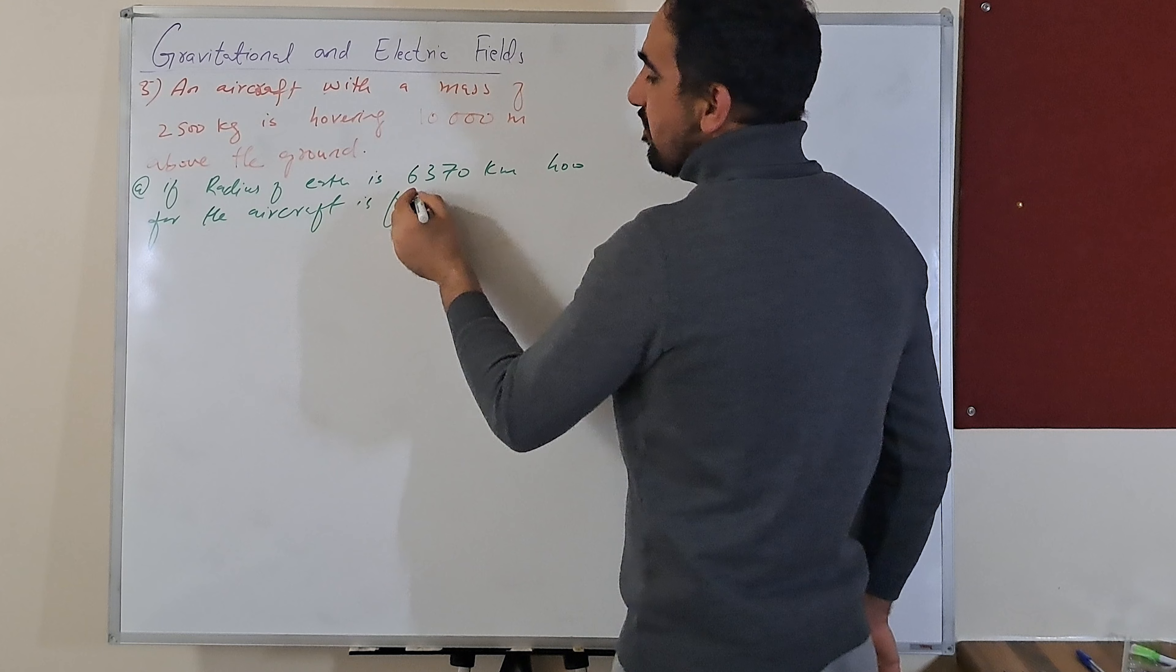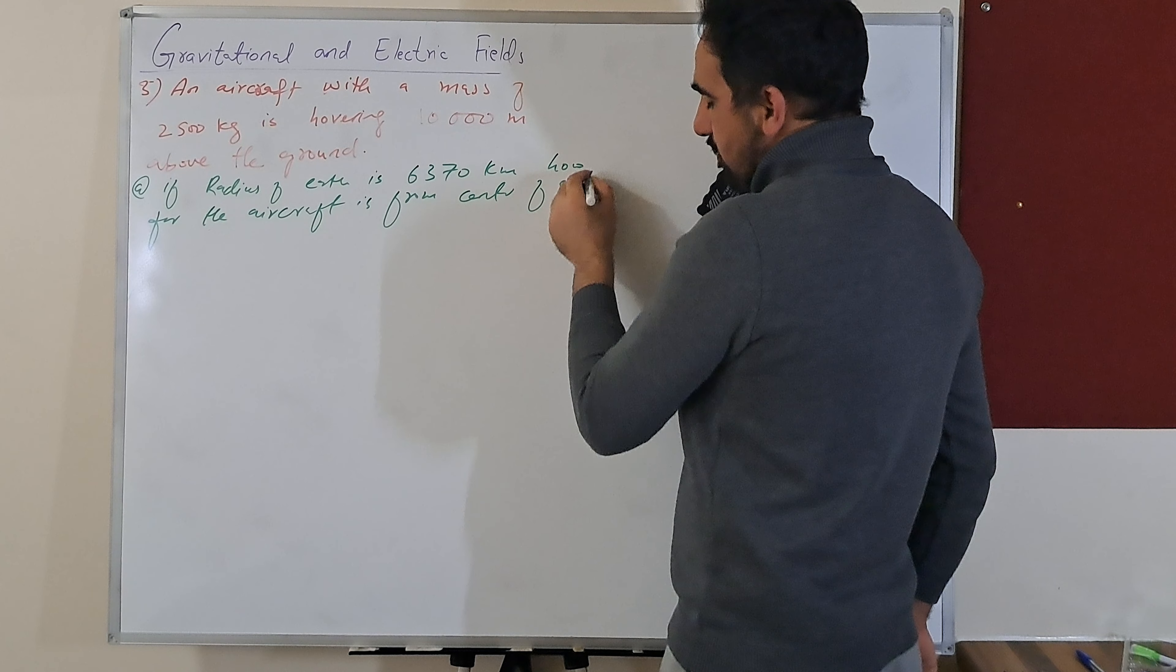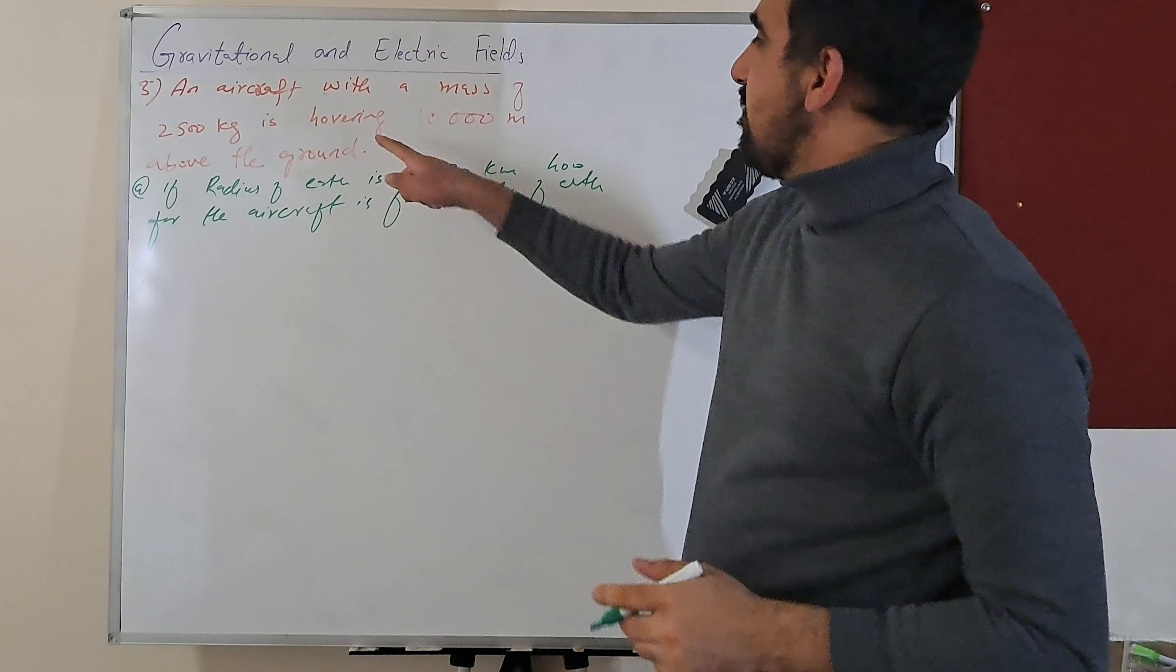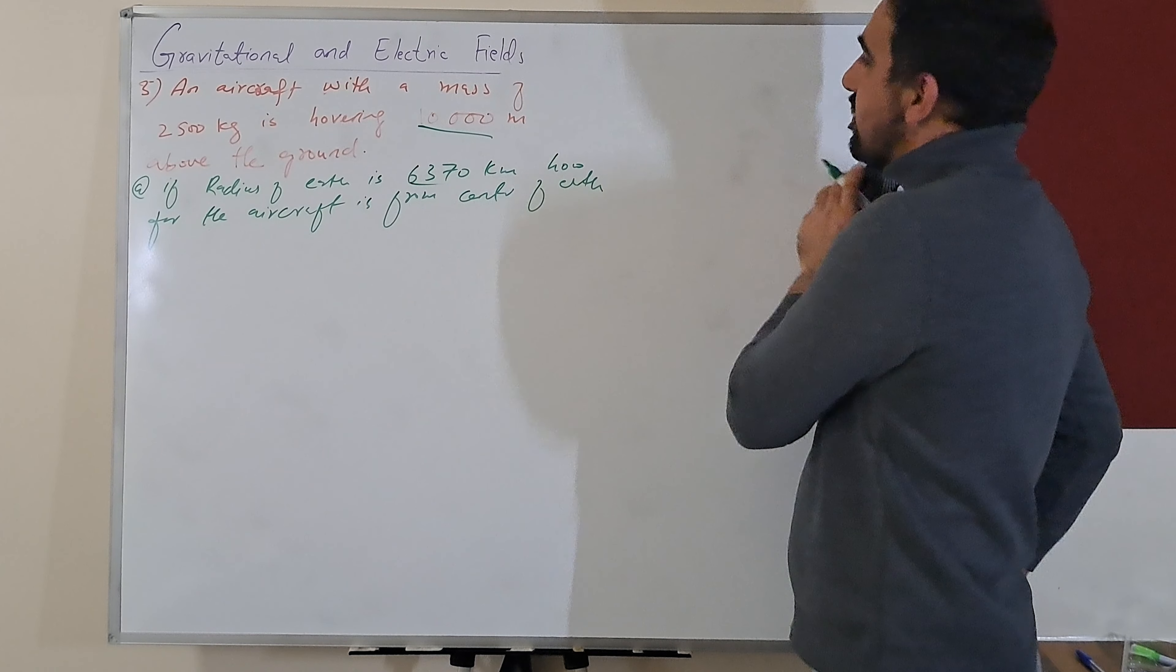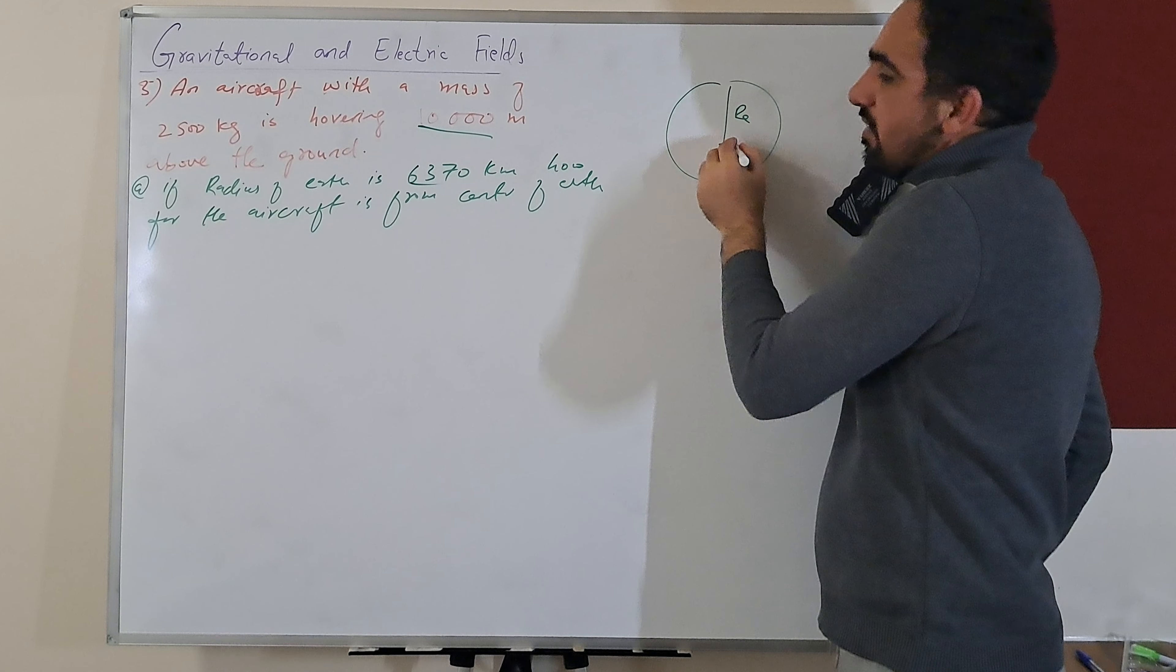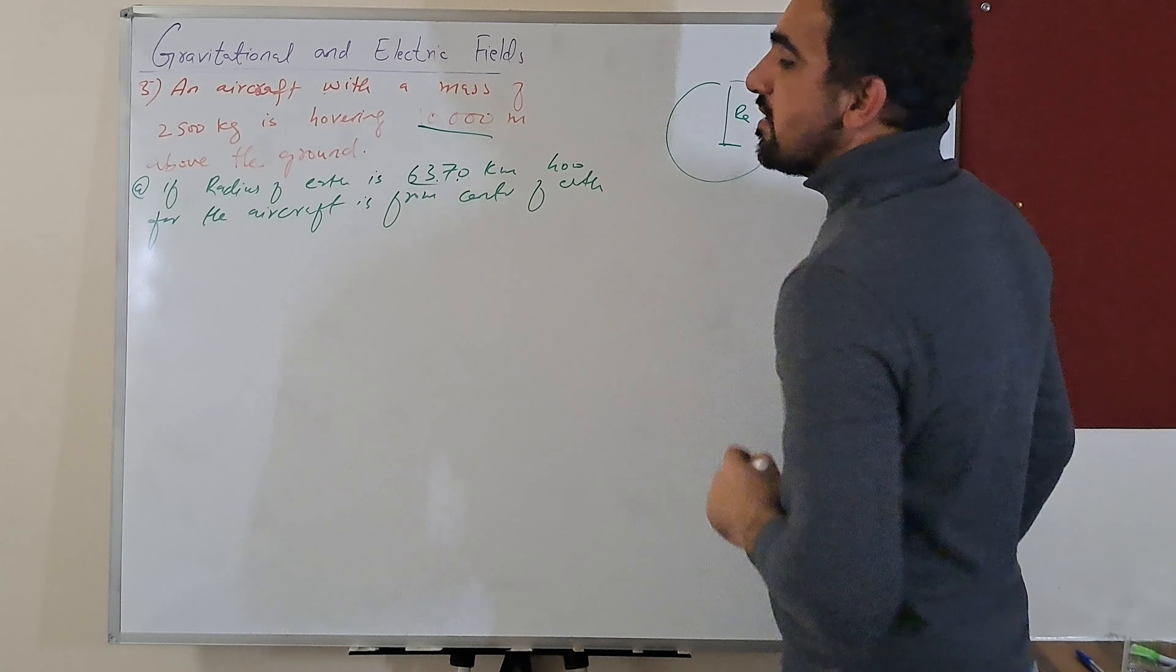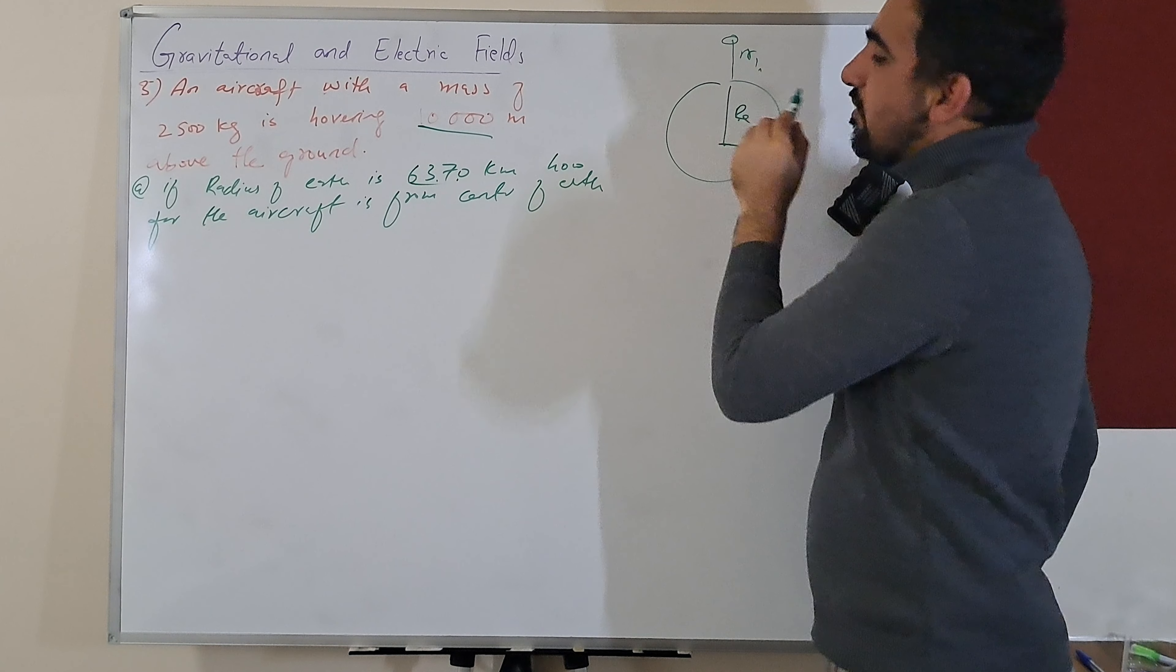This is very basic. What we need is to add these two distances. It's just like this: we got Earth whose radius is 6,370 kilometers, and we also got 10,000 meter height here. So this is our r1 small r1, and this is radius of Earth.